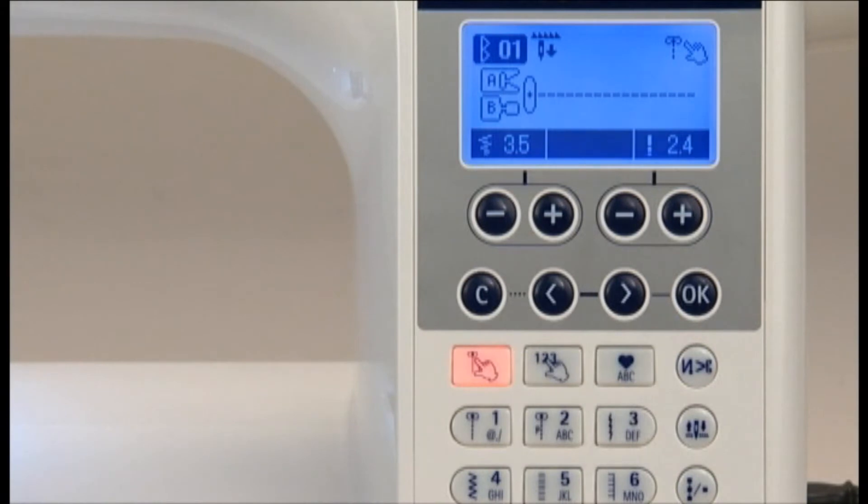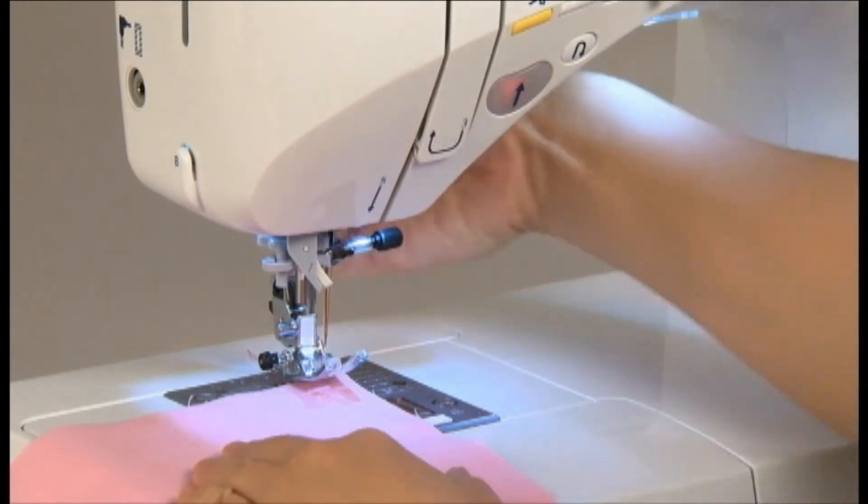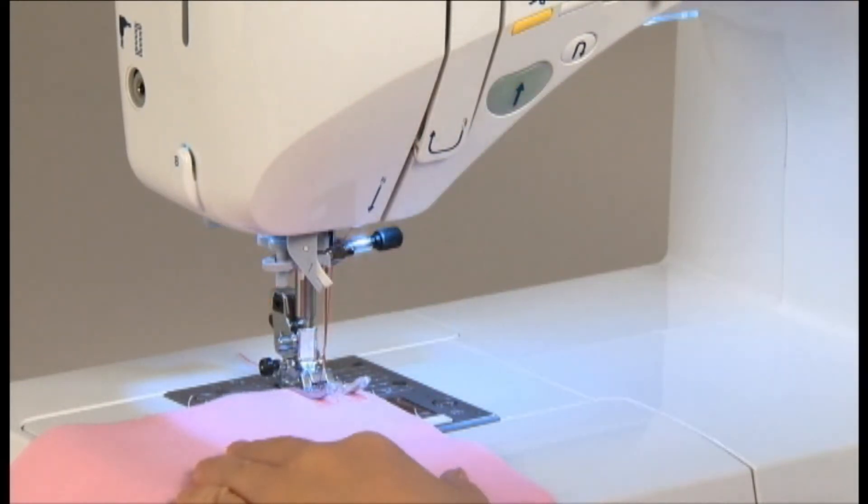Once you have selected automatic lock stitch and thread trimming function, position your fabric at the point where you want to sew, then start. The machine will sew a few reverse stitches before starting to sew.